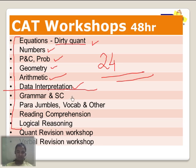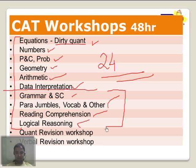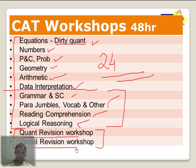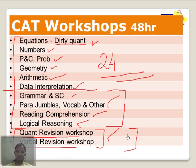Then, followed by verbal ability: grammar and sentence correction as one workshop; parajumbles and vocab as one workshop; and reading comprehension and logical reasoning. This is again enough to clear the cut-off for your verbal section. Towards the end, one week before the CAT exam, I will take a revision workshop for quant and verbal that will encompass everything done so far. That is how I am going to break my 48 hours — it is all about the shortcuts.